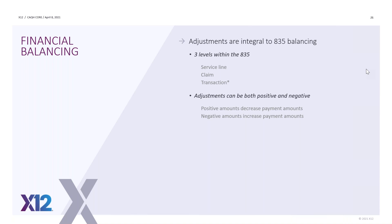Remember that a positive adjustment means you're decreasing the payment, and a negative means you're increasing the payment. You have to remember that as you're looking at signs, because the calculation is charges minus adjustments equals the payment. So if you do a negative amount, you're actually adding to it — sort of that old math from grade school and high school that's coming back to haunt us now.